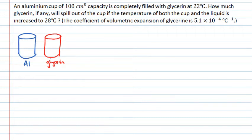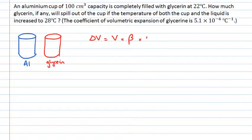Let's look at the glycerin first. The change in volume of the glycerin is proportional to its original volume, proportional to the coefficient of volumetric expansion beta, and also proportional to the change in temperature. If delta T is zero, then the volume doesn't change — it stays the same, which makes sense.